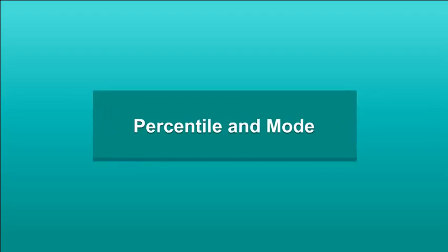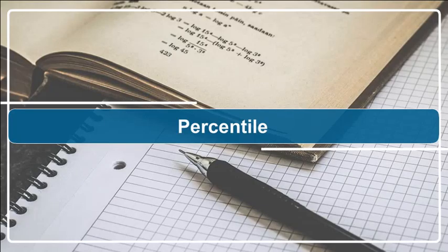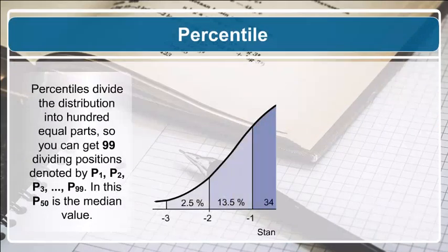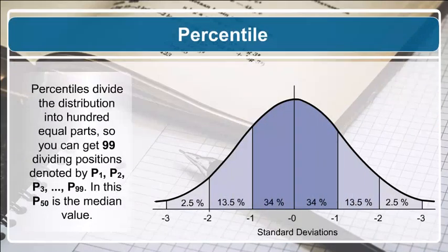Percentiles divide the distribution into 100 equal parts, giving 99 dividing positions denoted by P1, P2, P3, and so on till P99. P50 is the median value.